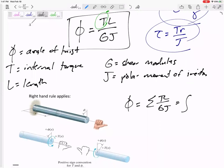What if some of these are a function? We might have to do T over G J as L goes from 0 to L. T over G J as L goes from 0 to L.